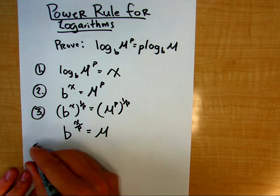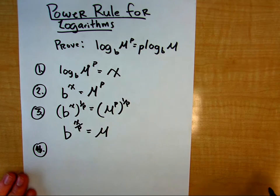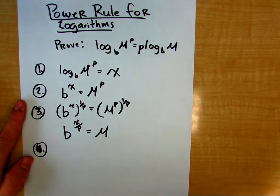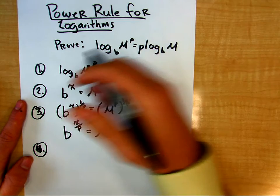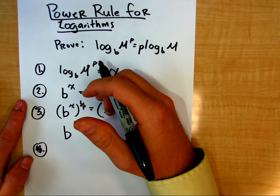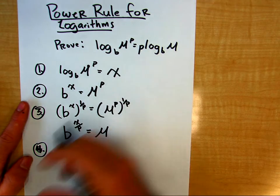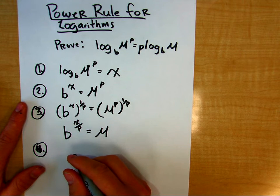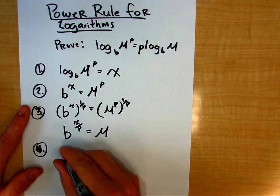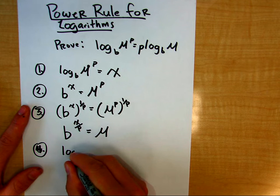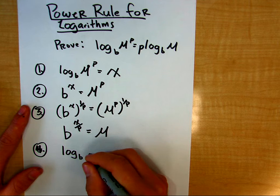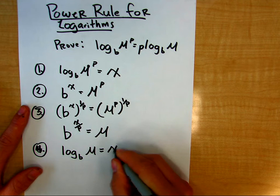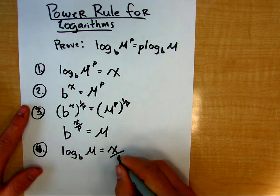Let's go ahead now and change this back to logarithmic notation. So here we changed it to exponential, we did some manipulations, and now let's change it back to logarithmic notation. So in doing that, I'll say that log with base b of m is equal to x divided by p, right, this exponent.